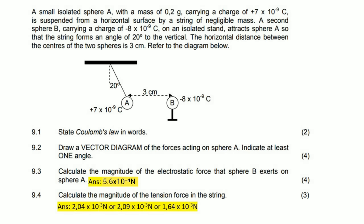So here we have an electrostatics question. We are told that we have a small isolated sphere A with a mass of 0.2 grams, carrying a charge of 7 times 10 to the minus 9, suspended from a horizontal surface by a string. A second sphere carrying a charge attracts sphere A so the strings form an angle of 20 degrees. The horizontal distance between them is 3 centimeters.